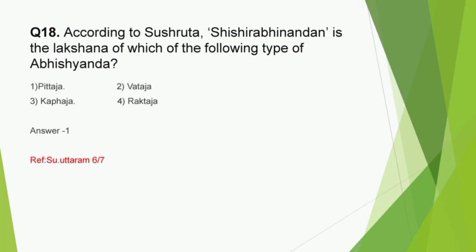Question number 18: According to Sushruta, Shishirabhinandana is the description of which type of Abhishyanda - Pittaja, Vataja, Kaphaja, or Raktaja? The correct answer is option 1, Pittaja. The context is Sarvakshigadha Roga. From this context, previous year questions include use of Kaumhasarpi in Raktaja Abhishyanda, Shiro Abhitapa seen in Vataja Abhishyanda, and questions related to Shushka Akshipaka. Netra Roga, especially Sarvakshigadha Roga, must be focused. It is important to learn the clinical features of Sarvakshigadha Roga along with their dosha predominance with precision so as not to confuse between Vata and Kapha, or between Pitta and Rakta.